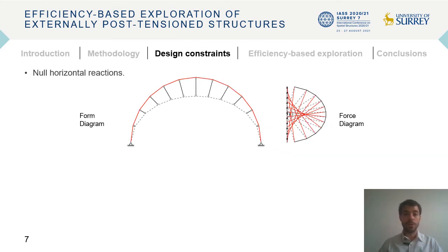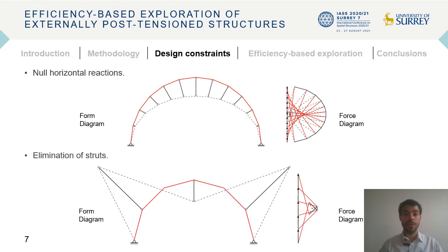It is also possible to find configurations in which the horizontal reactions of the supports are cancelled. These configurations require the post-tensioning system to be placed below the compression chord. Finally, modifying the orientation of the struts, it is possible to cancel the forces in a certain number of them, which would eventually allow to eliminate these struts from the structure.